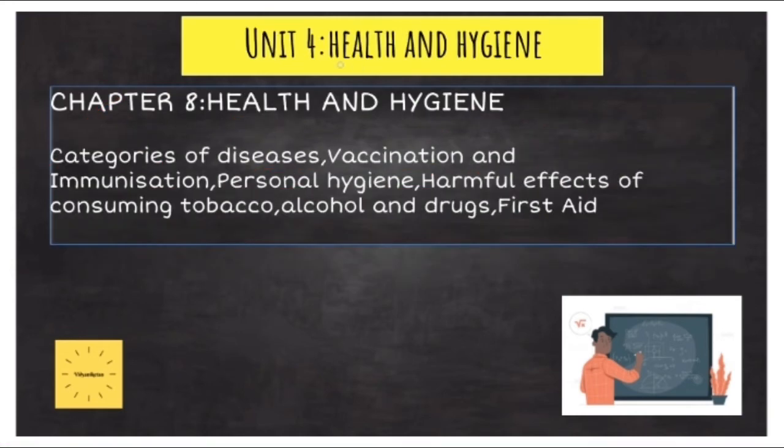The fourth unit is called Health and Hygiene. Under this unit, we have a single chapter wherein we are required to study about the categories of diseases, the process of vaccination and immunization which helps us in the protection of our body against these diseases. We will study about personal hygiene, the harmful effects of consuming tobacco, alcohol and drugs. And finally, we will study about first aid.